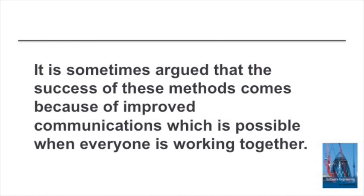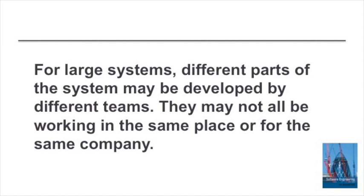Some of the success of using Agile methods comes because we use small co-located teams who can all communicate informally, who get together in a single room and can work and help each other in system development. When we increase the size of these systems it becomes impossible. Teams may not be co-located — they're not all working in the same place. The system itself may be broken down into individual programs developed separately by different teams, so we don't have the possibility of everyone getting together.